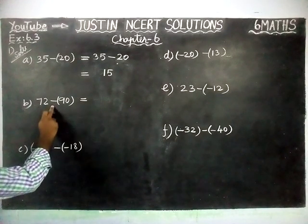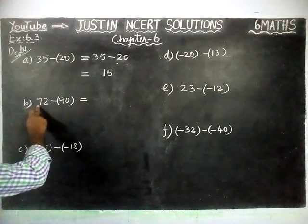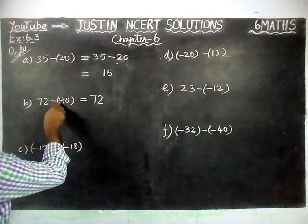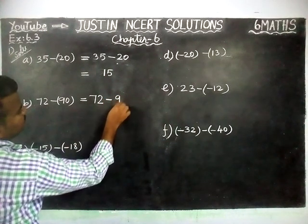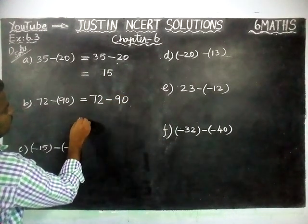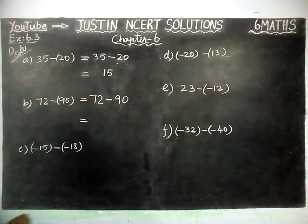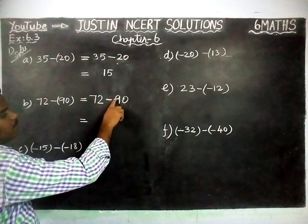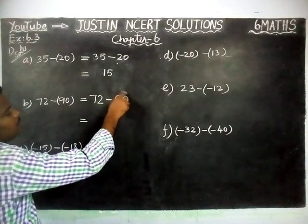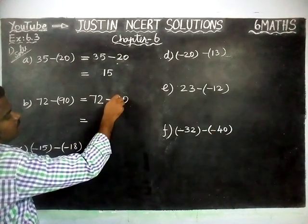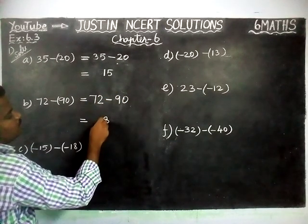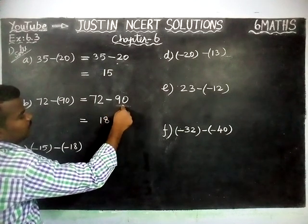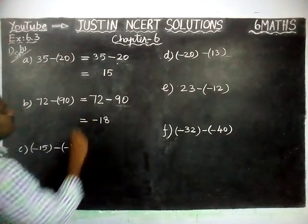Next, 72 minus 90. 72 is a positive number and 90 is also a positive number. So 72 minus into plus equals minus 90 — we find the difference. We subtract 90 minus 72: 0 minus 2 is not possible, so we borrow; 10 minus 2 equals 8, and 8 minus 7 equals 1. In between, 90 is the greatest number. In front of the greatest number a minus sign is there, so minus 18 is the correct answer.